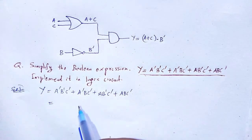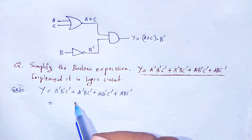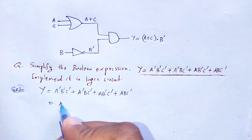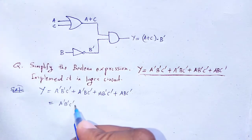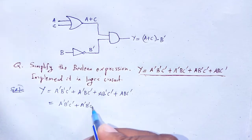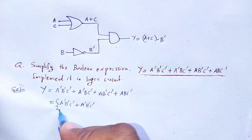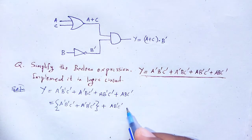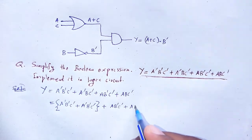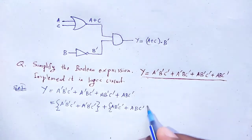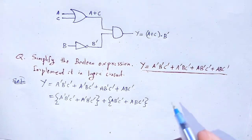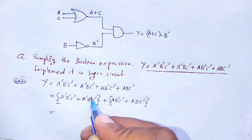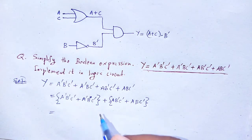So first of all, from A'B'C' + A'BC' + AB'C' + ABC', we take A'C' as common from the first two terms, and AC' as common from the last two terms.